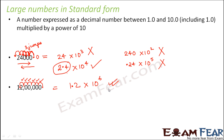Do you know why standard form is better? Because when you look at 5 consecutive zeros, you might misread them — for example, seeing 4 zeros instead of 5, thinking the number is 1 lakh 20,000 when it is actually 12 lakhs. So it is always better to write numbers in standard form so that you can read them clearly and without confusion.